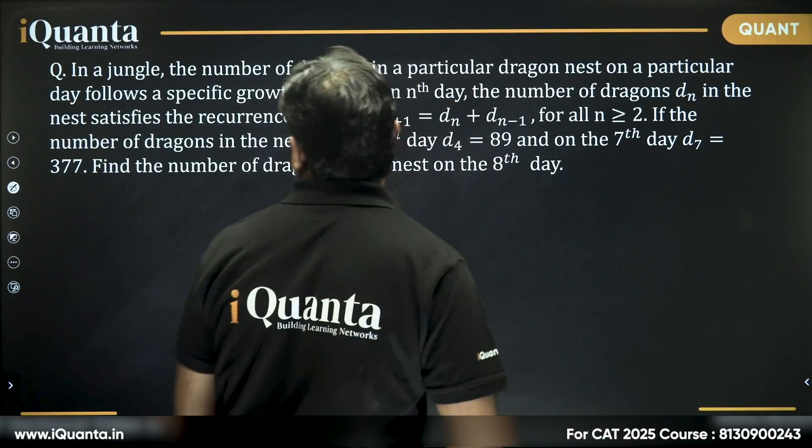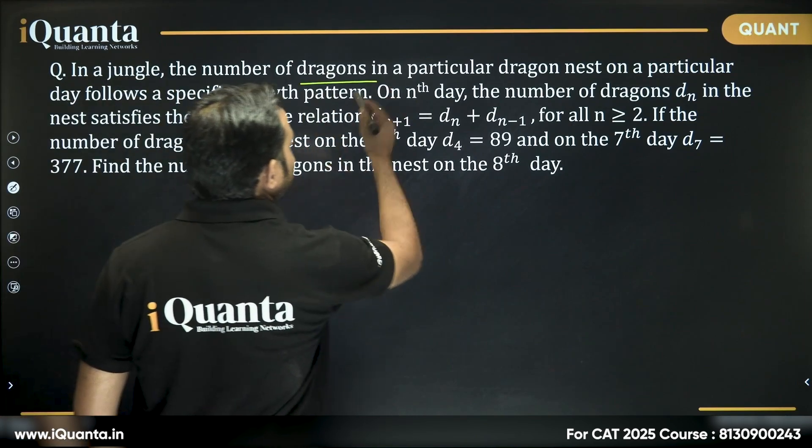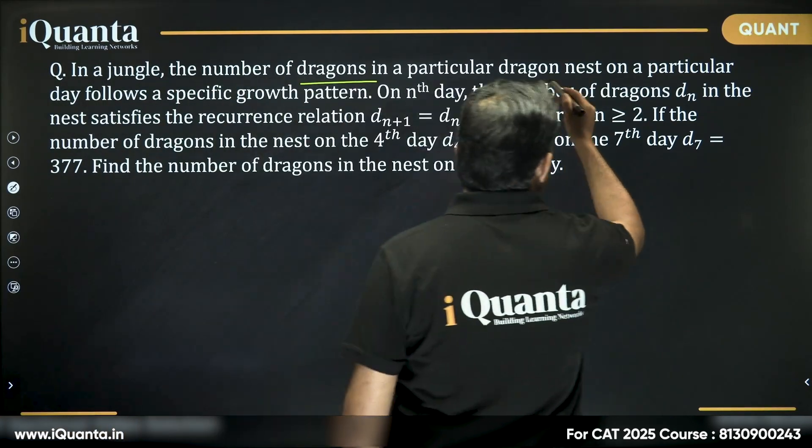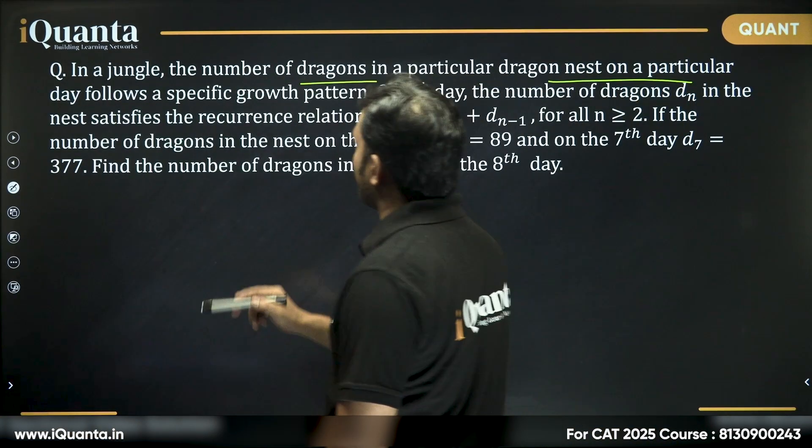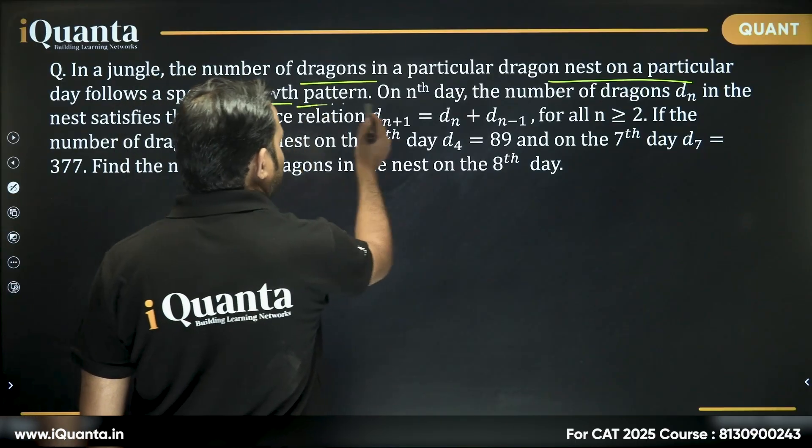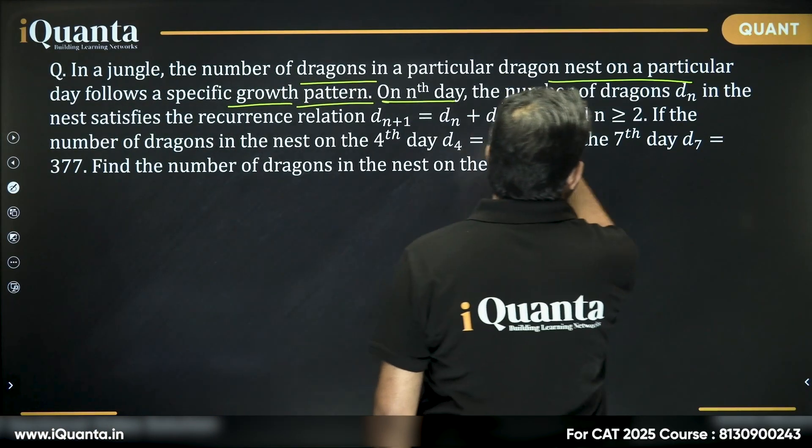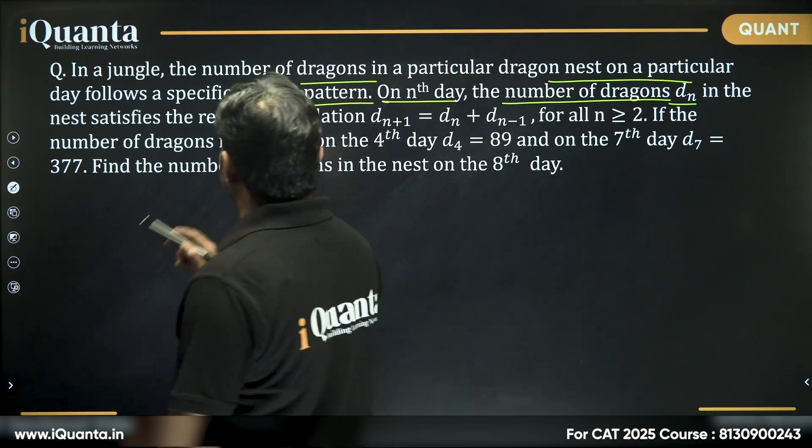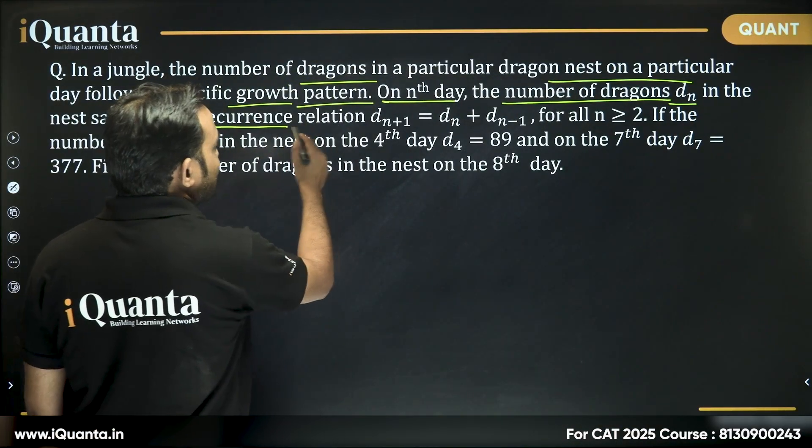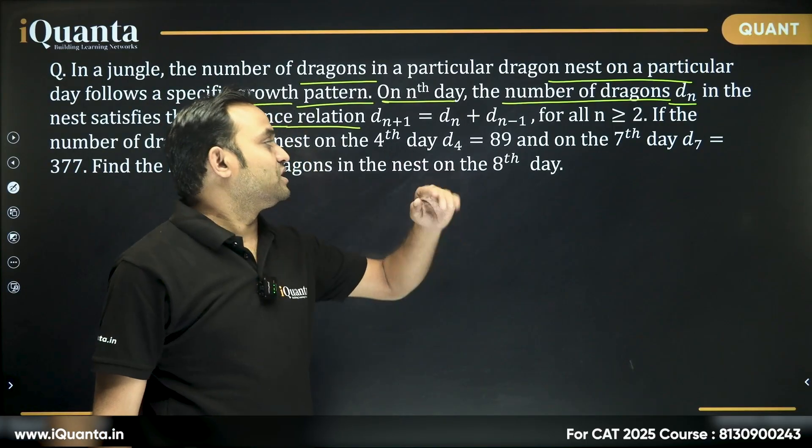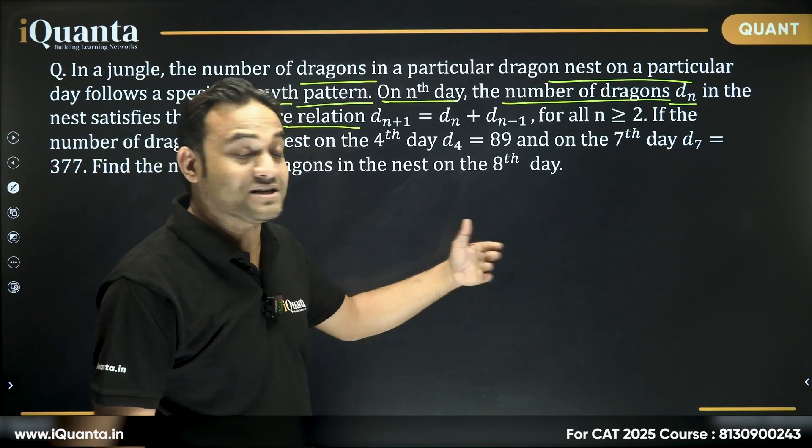It says, in a jungle, the number of dragons in a particular dragon nest on a particular day follows a specific growth pattern. What is that pattern? On an nth day, the number of dragons dn in the nest satisfies the recurrence relation, which is d(n+1) equals dn plus d(n-1).